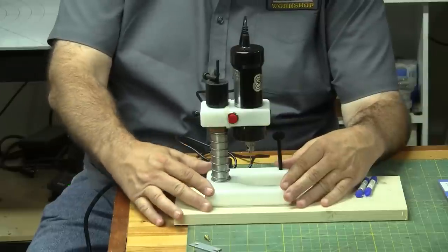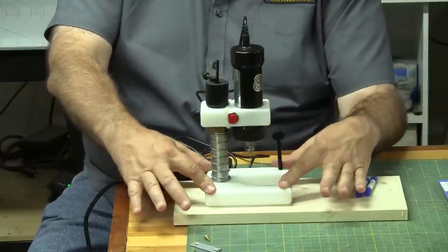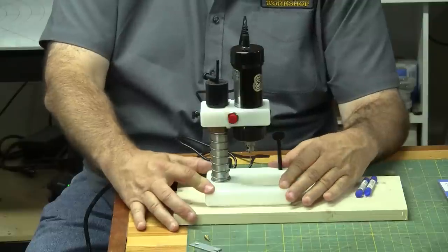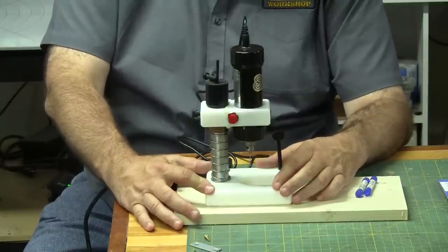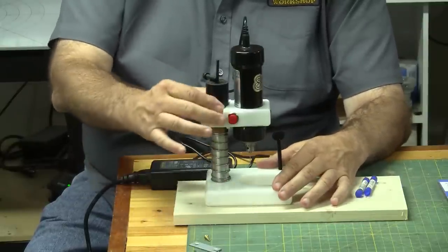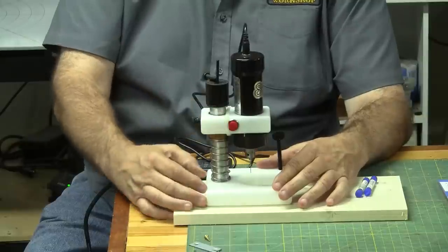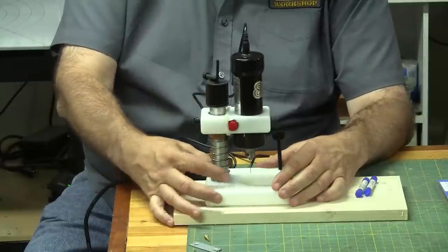It also has the feature that it will drill a perfectly 90 degree angle which you can't always do with a hand drill either. So this one, once you lay it flat on the wood and you push the drill down, you're going to get a nice 90 degree cut.